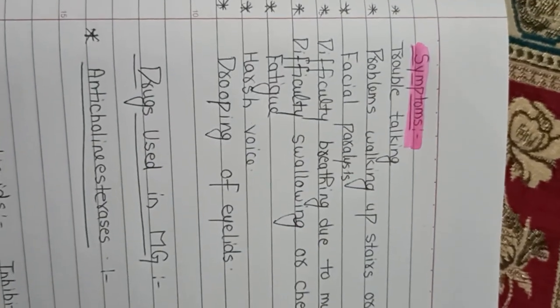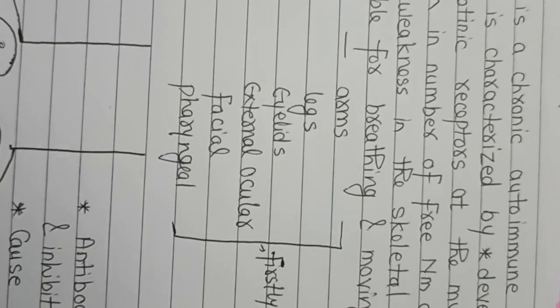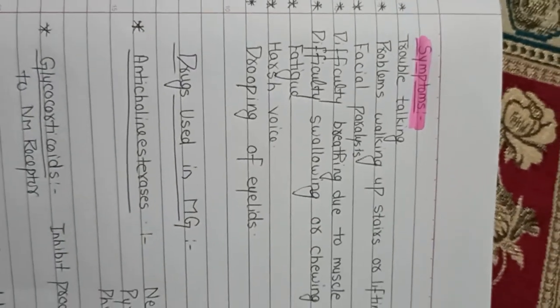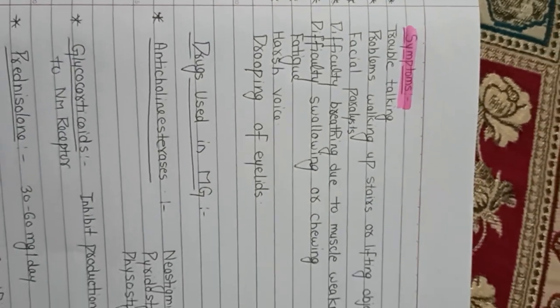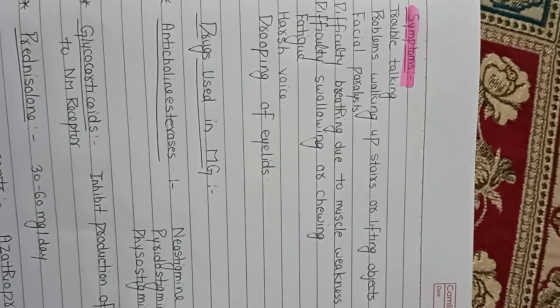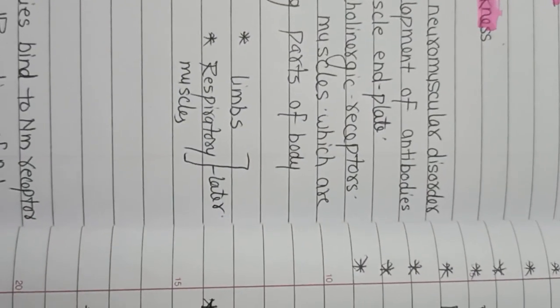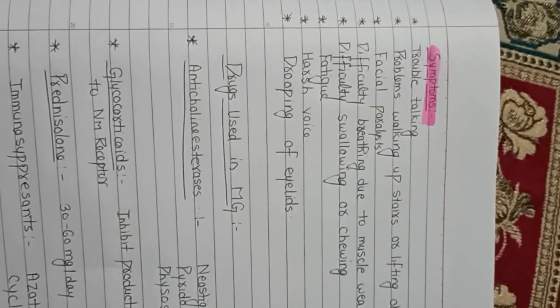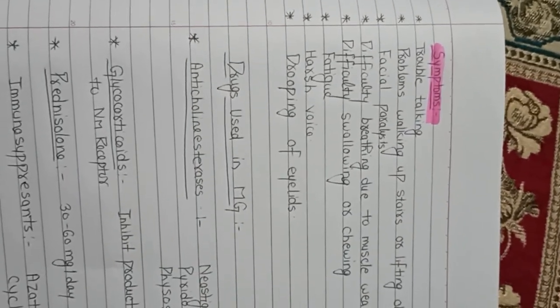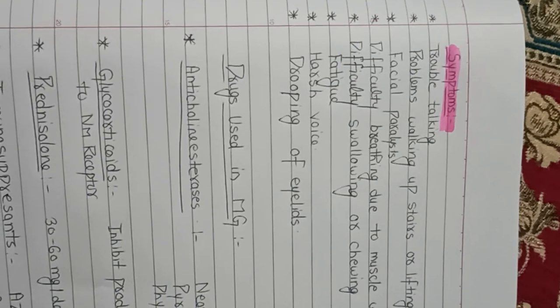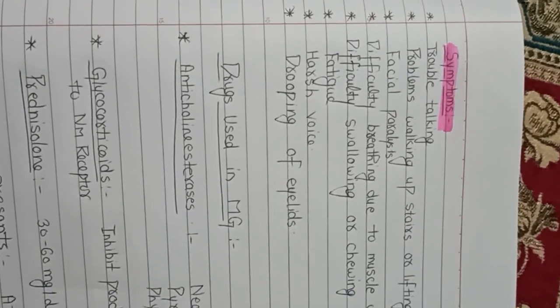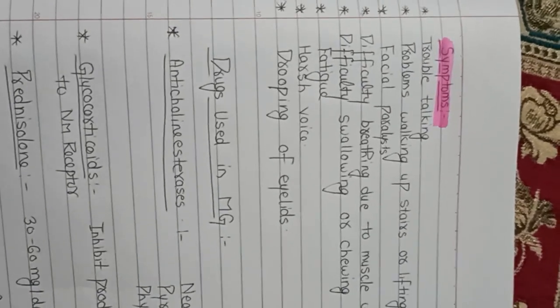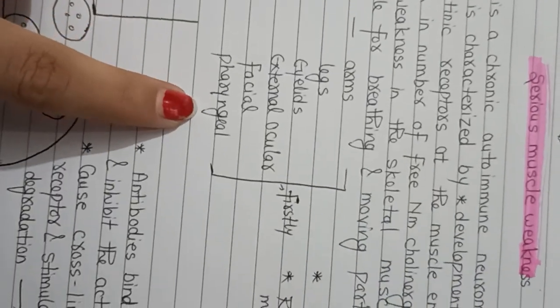Third, we have facial paralysis, because our facial muscles are involved. Next is difficulty breathing — there is a problem with breathing due to muscle weakness. We have said that the respiratory muscles are affected by this disorder, so we also have a problem with breathing. Next is difficulty swallowing or chewing, because the pharyngeal muscles are involved.